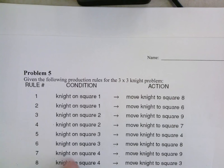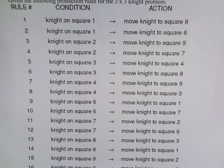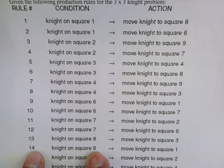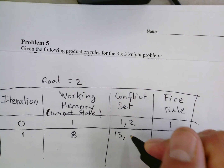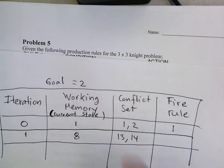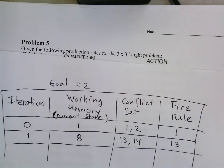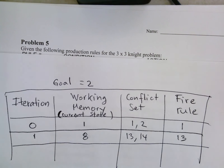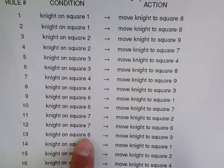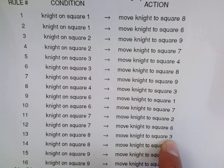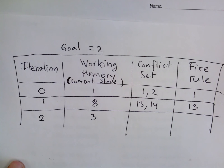Being on square eight matches rules 13 and 14, so the conflict set now contains rules 13 and 14. We execute rule 13 first, which moves the knight to square three. So in working memory, the current state is now square three.